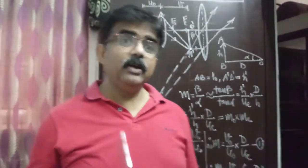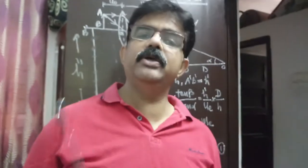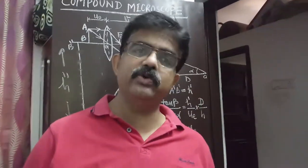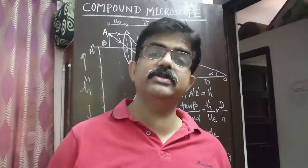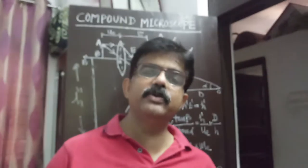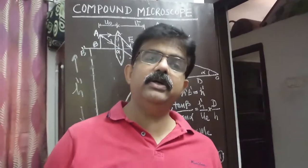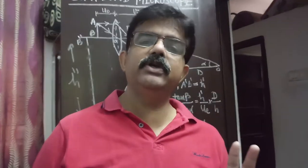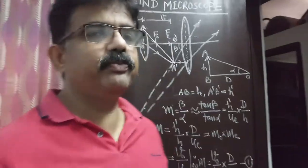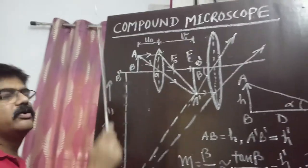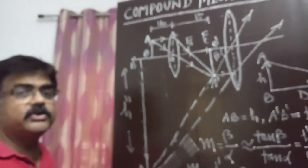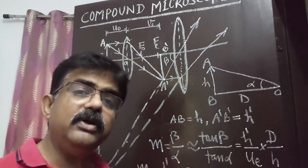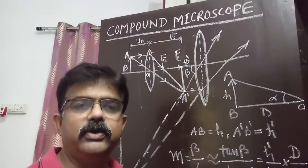Good morning. In the last lecture, we discussed optical instruments and the simple microscope. I hope you studied and prepared simple microscope. The magnifying power of a simple microscope is D/UE and 1 + D/FE — these are the two formulas for magnification or angular magnification. Today I am going to teach you compound microscope, because the magnification of a simple microscope is limited, and to increase magnification we require a compound microscope.